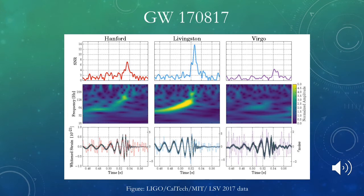GW170817 became infamous because it was the first instance where we detected an electromagnetic counterpart signal to a gravitational wave signal — making it the birth of multi-messenger astronomy. First we detected the gravitational wave signal; a follow-up campaign was sent out to optical, UV, and infrared observatories to search for an electromagnetic signal at the sky location. Thanks to all three interferometers detecting the signal, we had good sky localization, and an electromagnetic signal — initially a gamma-ray burst — was detected.